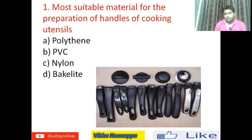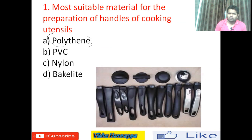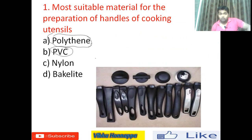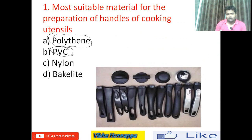Most suitable material for the preparation of handles of cooking utensils. Option A polythene, option B PVC, option C nylon, option D Bakelite. Polythene is basically used in plastic bags and many other plastic items like kids' toys. PVC is polyvinyl chloride, used for doors instead of wooden doors or in pipes — one of the most important plastic materials. Nylon is used as a cloth material like pants, jersey, or other cloth items.